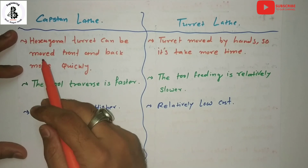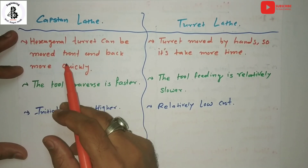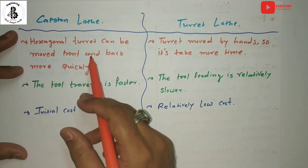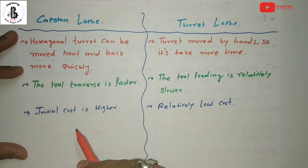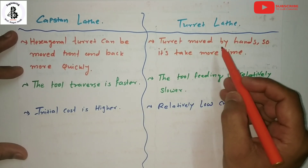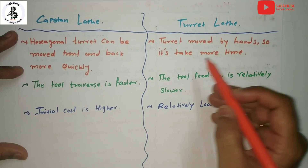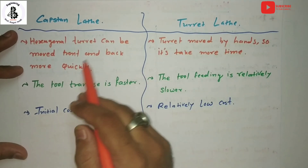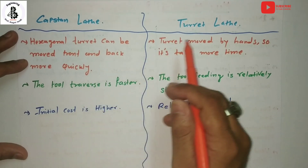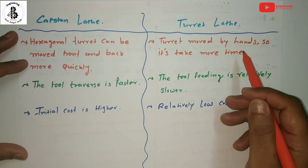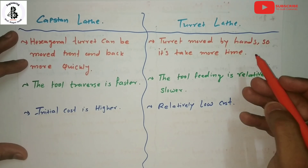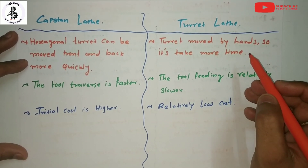For the capstan lathe, the hexagonal turret can be moved front and back more quickly, as discussed in the detailed theory of the capstan lathe. For the turret lathe, the turret is moved by hand, so it takes more time. This makes the capstan lathe quicker for machining jobs, while the turret lathe requires more time, reducing productivity and accuracy.